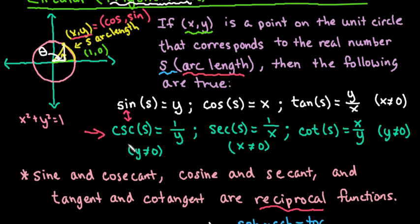So sine and cosecant are reciprocal functions. So reciprocal just means to switch the coordinates. Like if I basically flip this around, instead of being y, it's going to be 1 over y. Cosine and secant are reciprocal functions. So x becomes 1 over x for the secant. And then cotangent and tangent are reciprocal functions. So I'm just flipping my fraction to x over y.